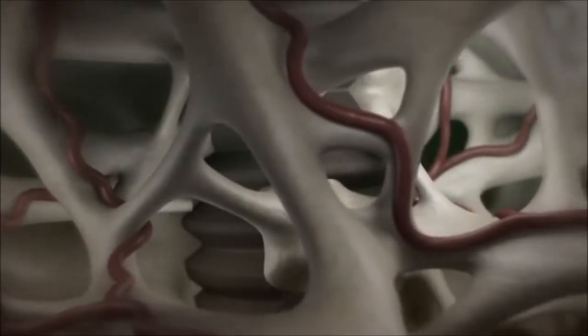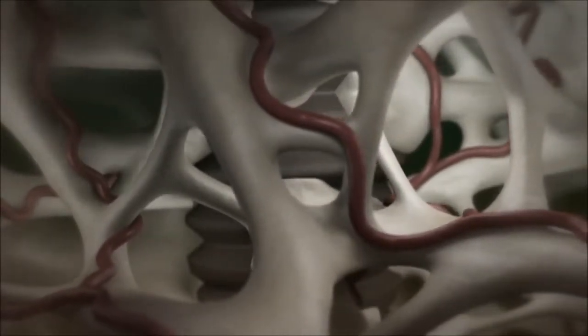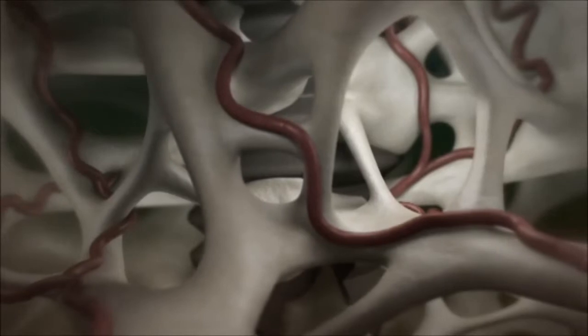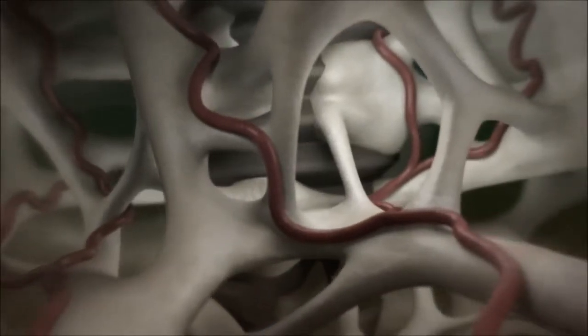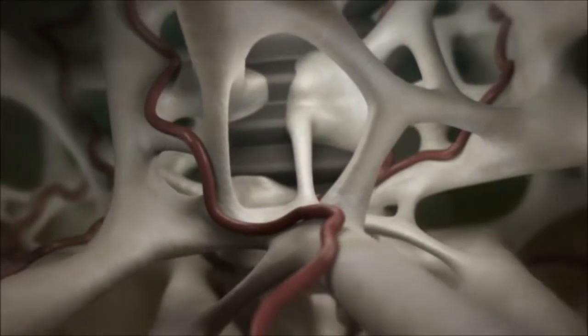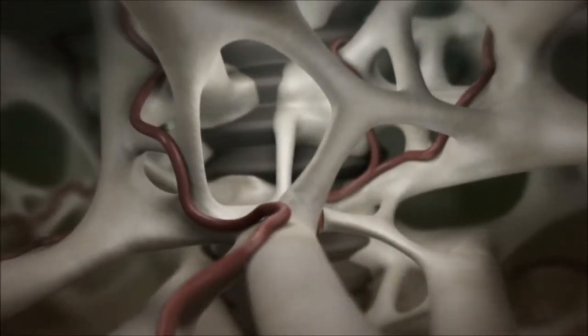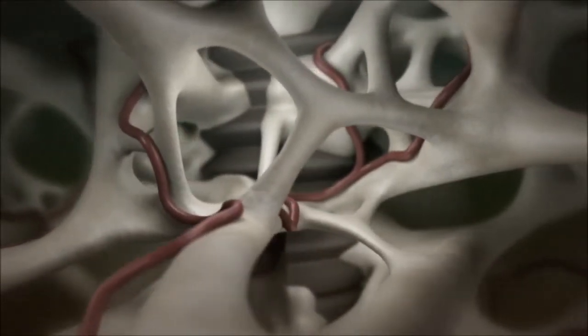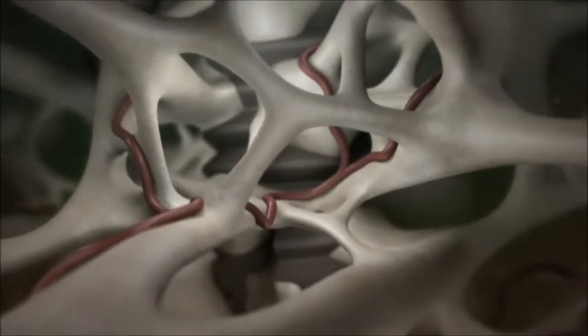At the end of the first week after surgery, woven bone is formed at the implant surface. This in turn promotes increasing secondary stabilization of the implant, making up for the progressive loss of primary stability. The formation of woven bone concludes the proliferative phase of wound healing.